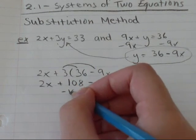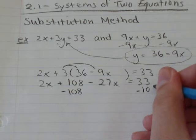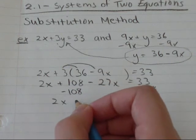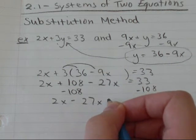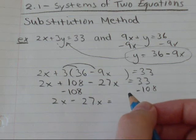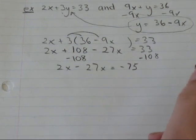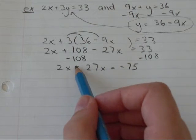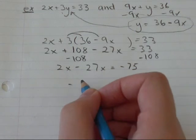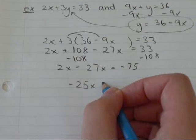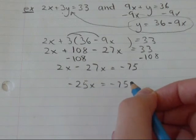So I'm going to subtract my 108 from both sides. I'm going to get 2x minus 27x equals 33 minus 108 is negative 75. So 2x minus 27x is going to be negative 25x equals negative 75.